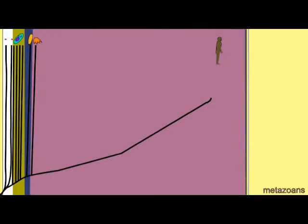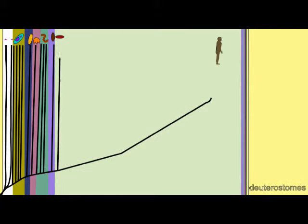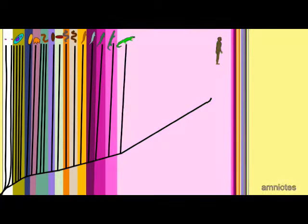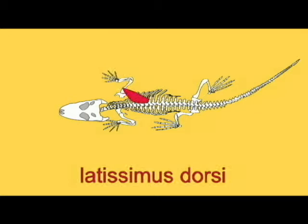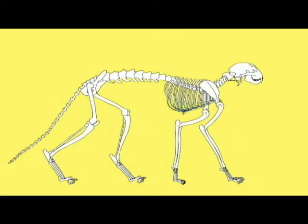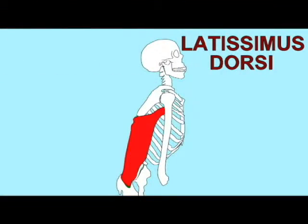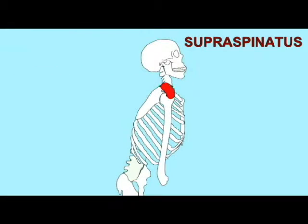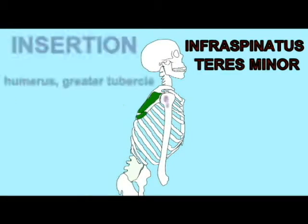You can look at the distribution of anatomical and genetic traits to see if this is reflected there. For example, are there anatomical traits which are only retained within the mammals, or within the primates, or within the birds? Are there molecular traits which are only contained in a certain group?